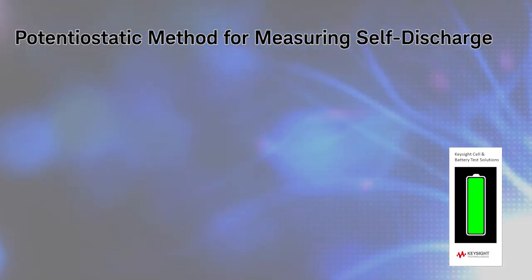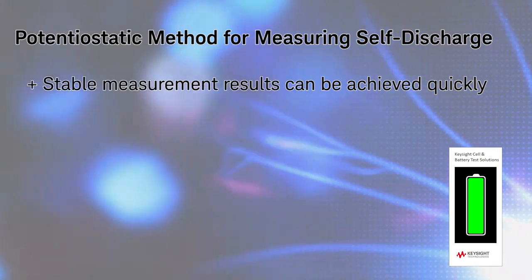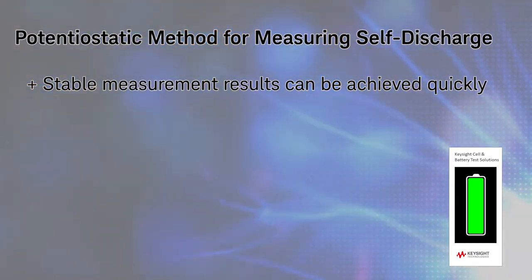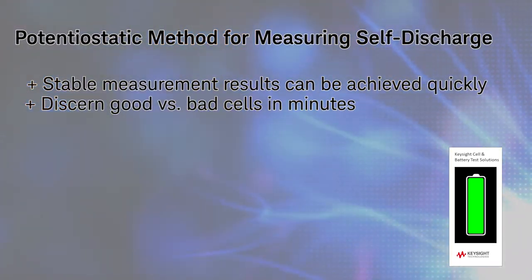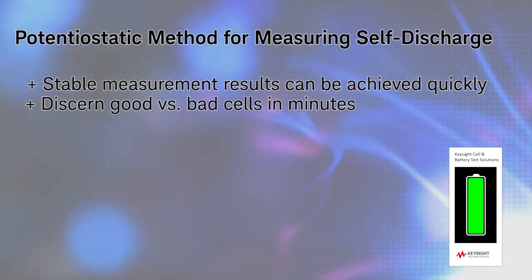To summarize the potentiostatic method, stable self-discharge measurement results can be achieved quickly. You can discern good versus bad cells very quickly. But there are issues that you need to be aware of and manage.